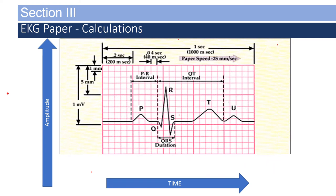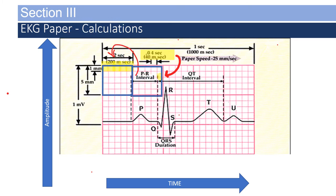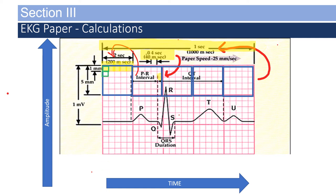The EKG paper is divided into blocks. Left to right is equivalent to time, and up and down is amplitude. Each small block across the time margin is 0.04 seconds; five of those blocks is 0.2 seconds. Along the left margin, measured in millimeters or millivolts, each small block is one millimeter and every five blocks is five millimeters, with two large boxes of five being one millivolt.